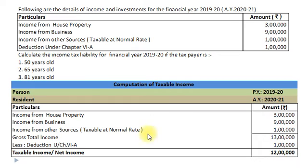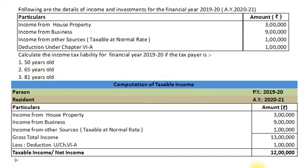Taxable income will remain constant at Rs. 12 lakh for all 3 categories of persons – 50 years, 65 years, and 81 years old. Now we will compute tax liability for all these 3 categories of persons.